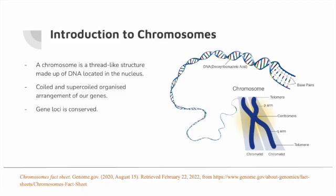In the diagram you can see the centromere in the center, which connects the two chromatids. At the ends are the telomeres, which are repetitive sequences of non-coding DNA — DNA that doesn't code for any proteins. You'll also see the P arm, which is the shorter segment of the chromatid, and the Q arm, which is the longer segment of the chromatid.